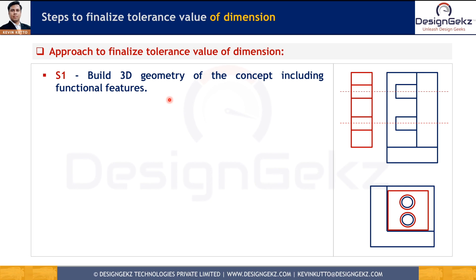Each feature has a certain function to deliver in the assembly. In this example, we have a red part and a blue part. The red part is going to touch the blue part at its side and rest on this face, and in that condition these lugs should assemble with the holes. So we have to prepare the CAD model and geometry for these two parts first.